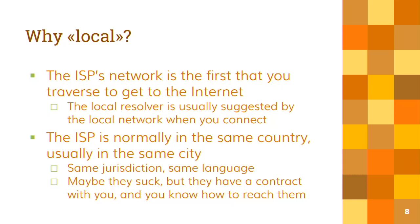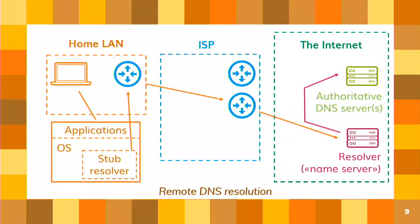The resolver is local not just in network terms — it's the nearest piece of the internet relative to your home — but also in juridical, cultural, social, and business terms. The ISP through which you get your internet connection is usually in your same country or even the same city, they speak your language, you have a contract with them, you know how to reach them, and they can fix the internet access if something doesn't work. The newer model — though it's been in place for 10–15 years — is remote DNS resolution, where the name server is no longer provided by your ISP and is instead somewhere over the internet provided by a third party.